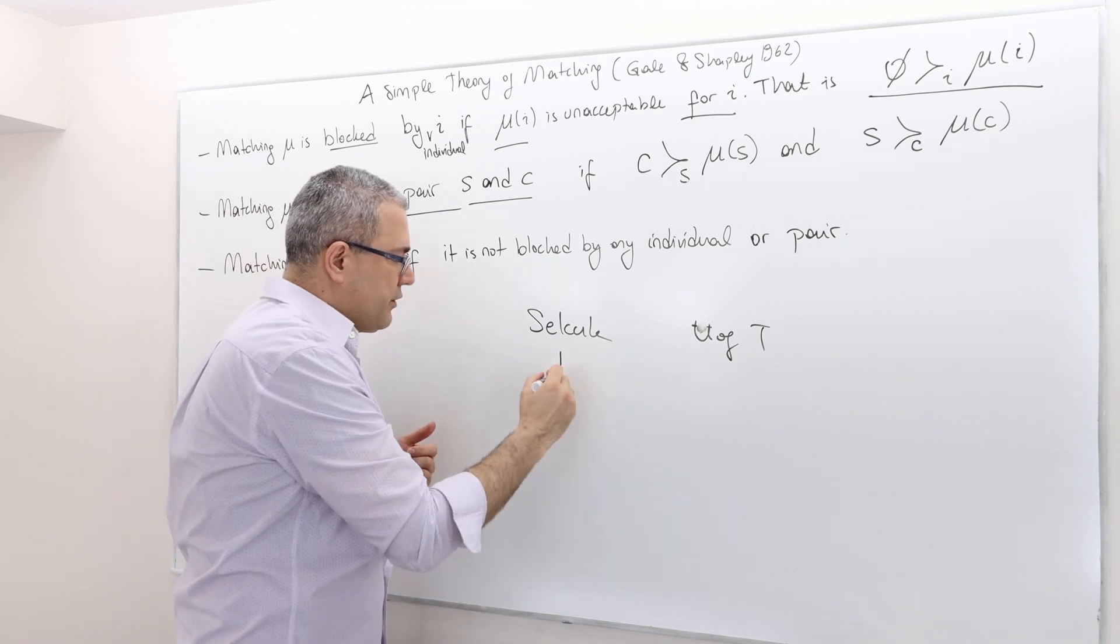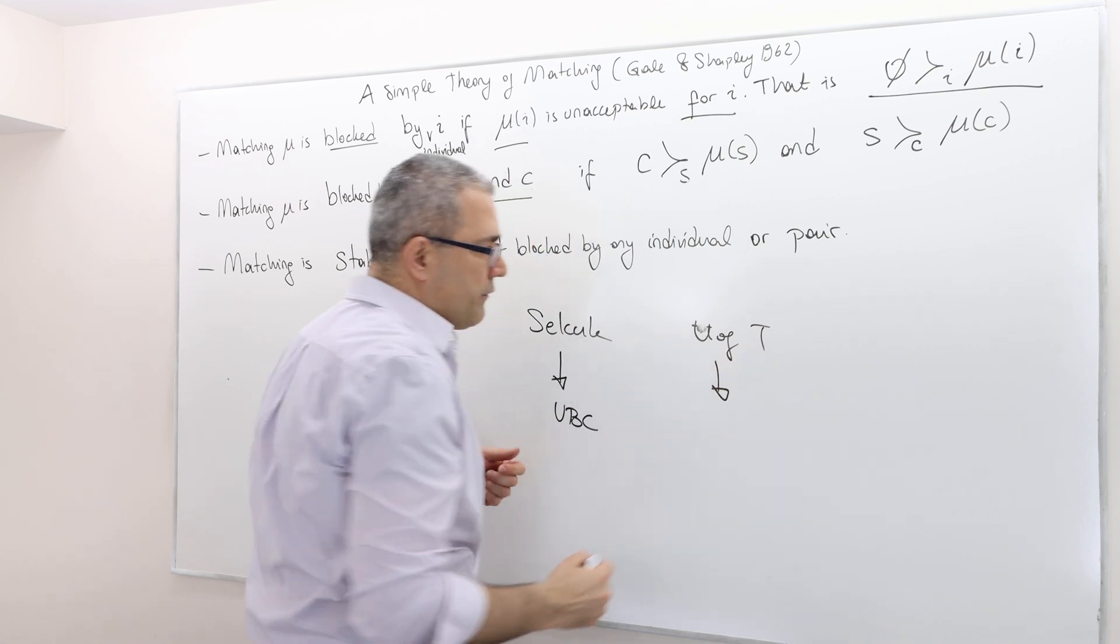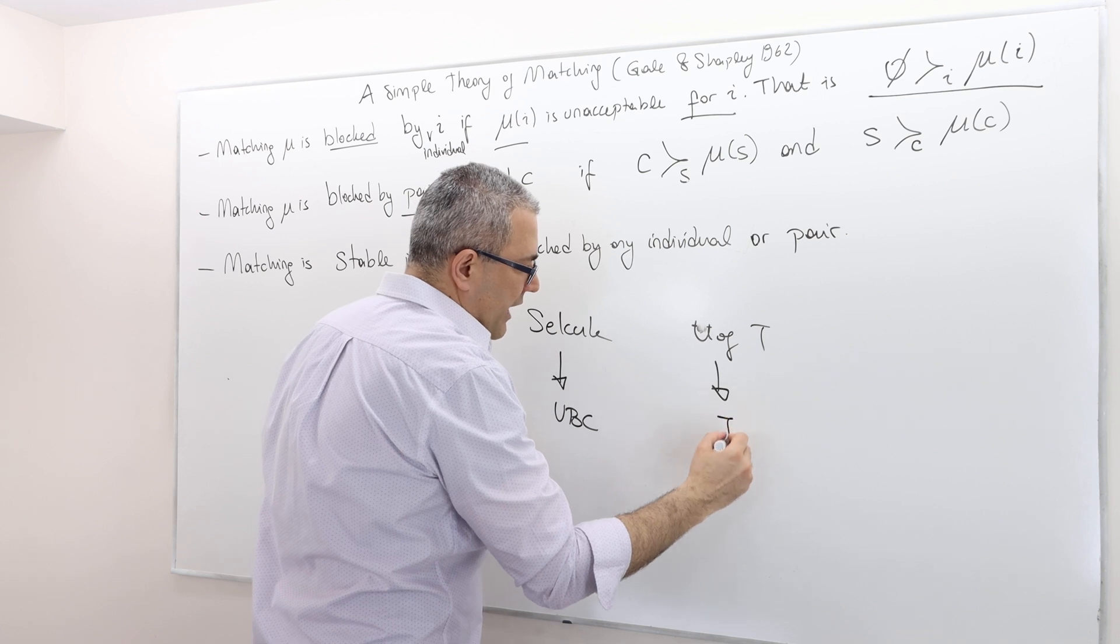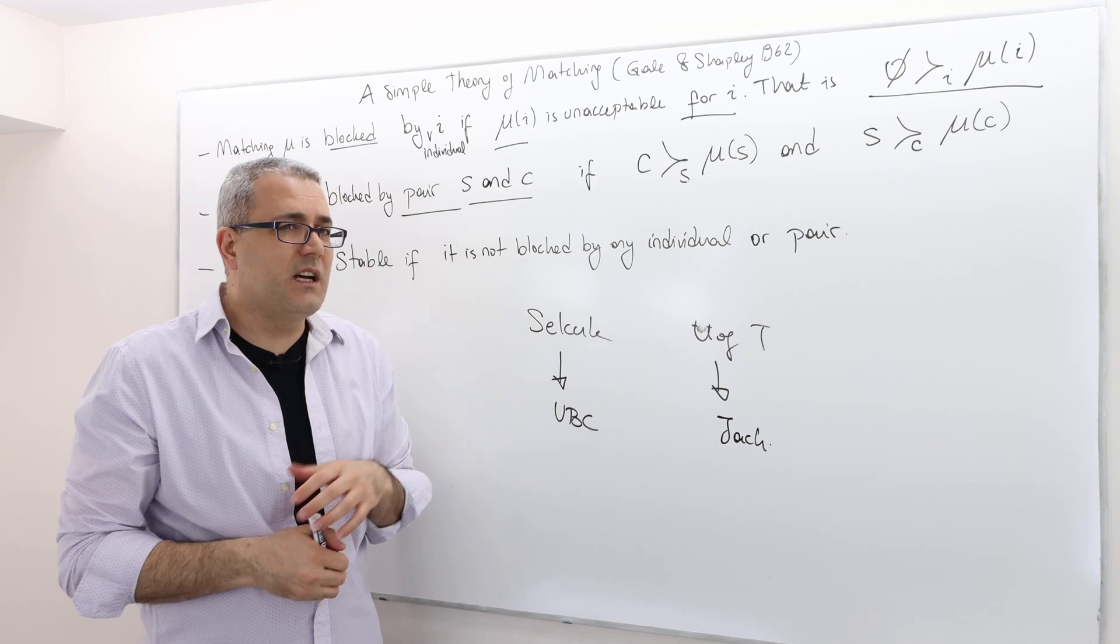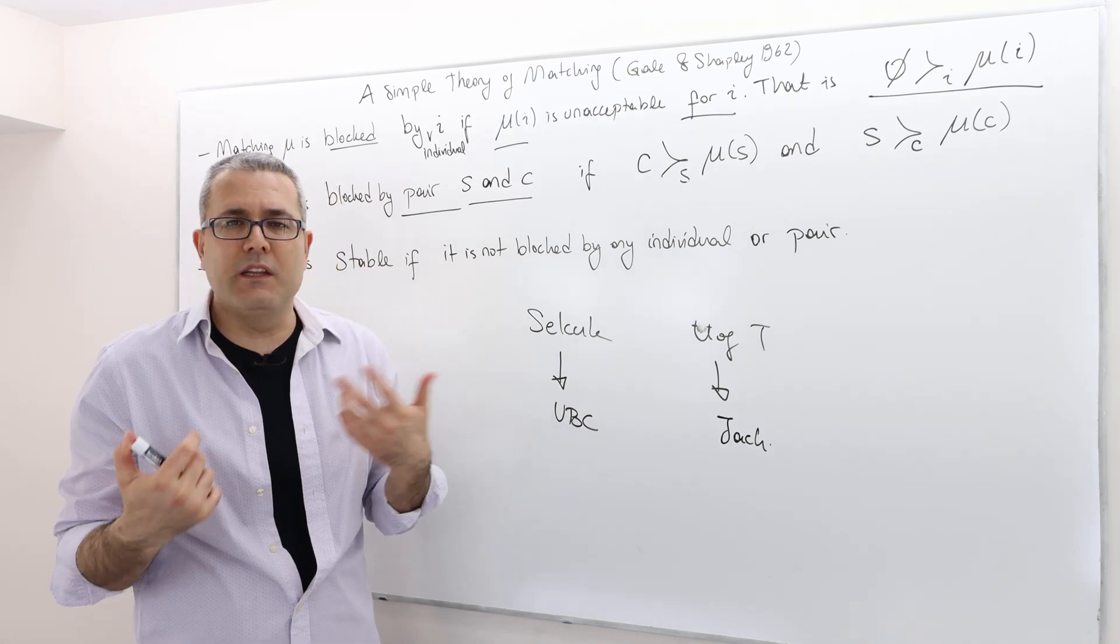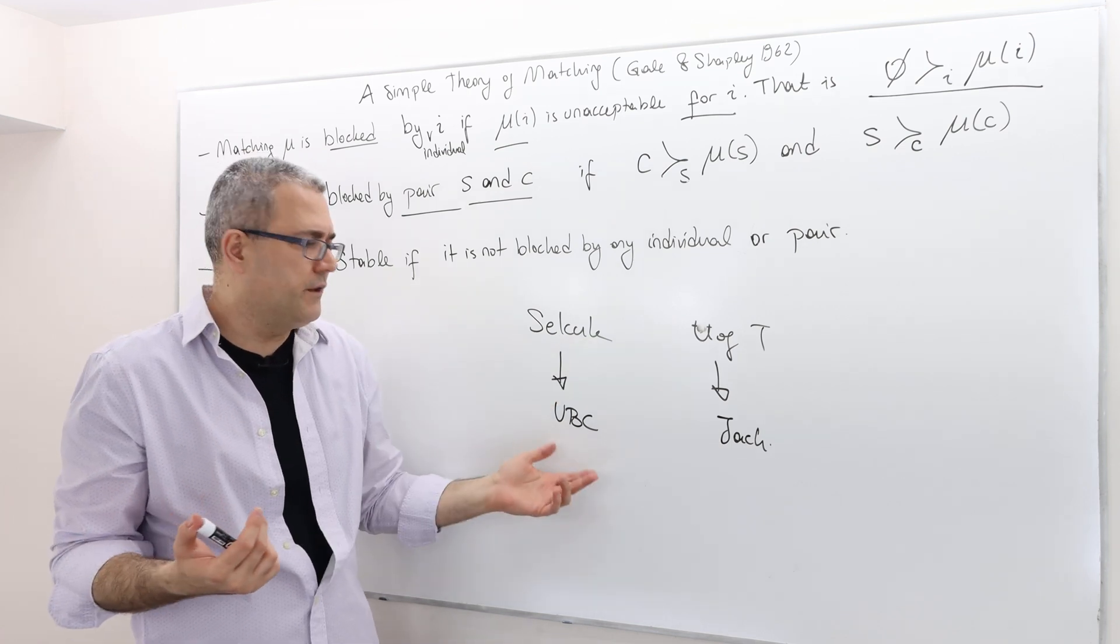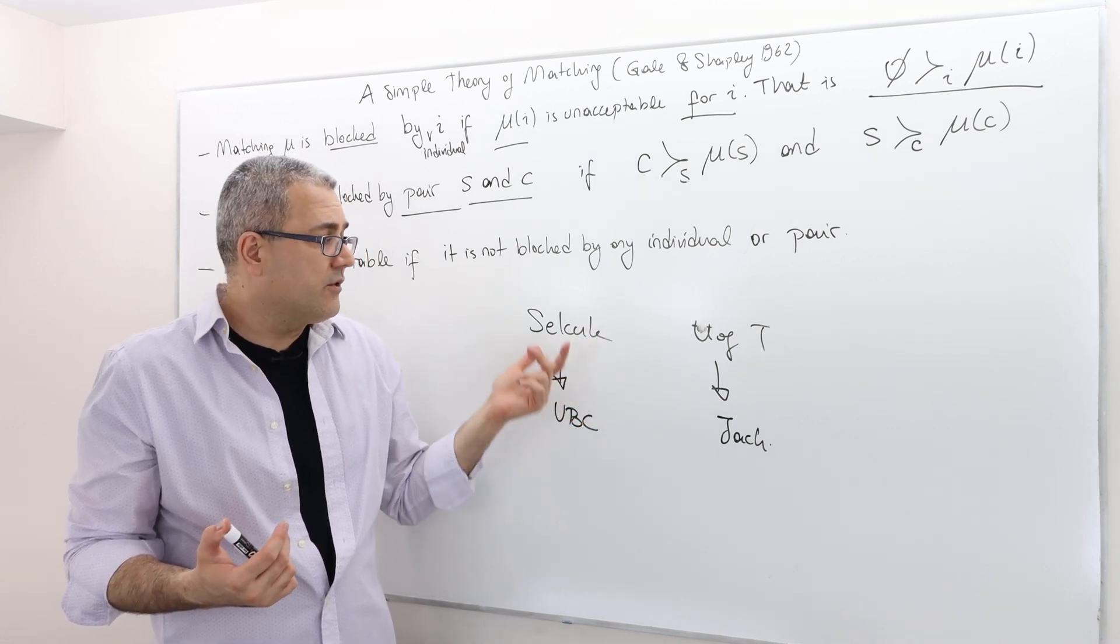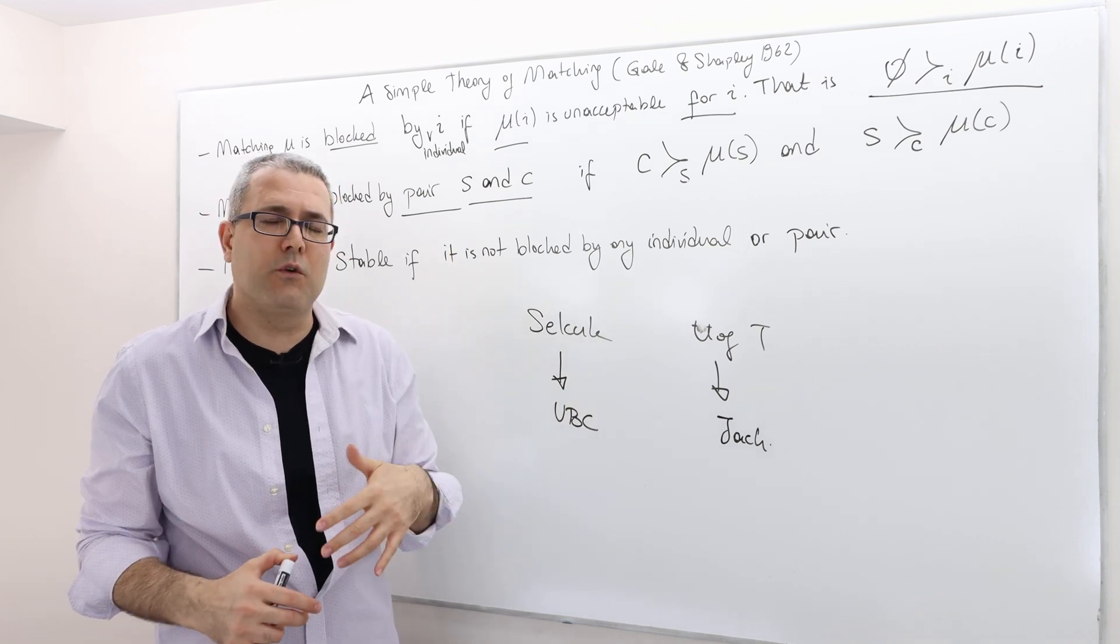Selçuk is matched to University of British Columbia, let's suppose, and University of Toronto is matched with some other guy, Jack. But the thing is, Selçuk says, actually, you know what, I prefer U of T over UBC because I live in Toronto and I don't want to leave Toronto. And so I definitely prefer U of T over UBC. And then U of T says, actually, Selçuk is a better student than Jack, and so I prefer Selçuk over Jack.